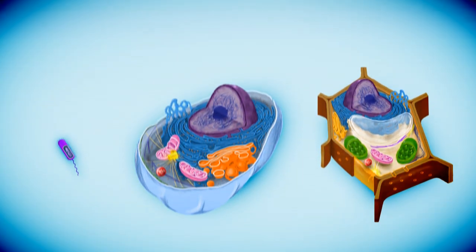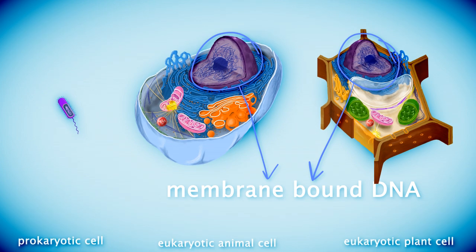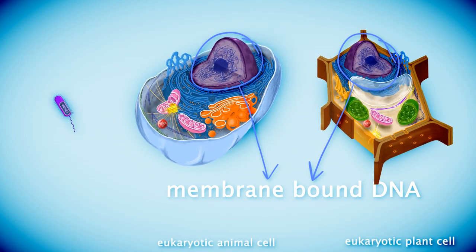Eukaryotic cells have more organelles and therefore are bigger than prokaryotic cells. The main difference between prokaryotic and eukaryotic cells is that eukaryotes DNA is membrane-bound inside a nucleus, whereas a prokaryotes DNA is not membrane-bound.